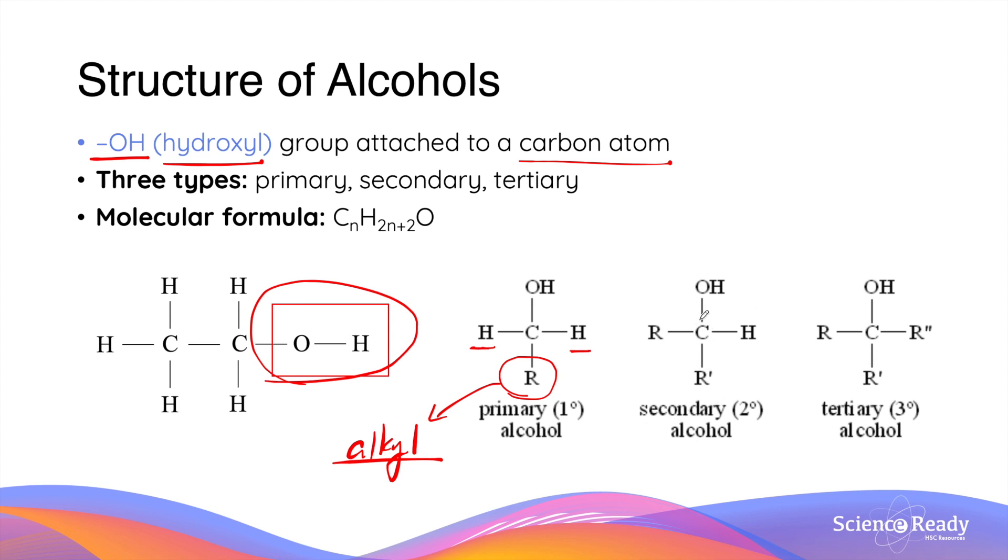Secondary alcohol is when the carbon atom that has the hydroxyl functional group is connected to two alcohol groups, so two carbon atoms and one other hydrogen atom. Tertiary alcohol is when the carbon atom is connected to three adjacent alcohol or carbon atoms. It is very important for you to understand and learn how to recognize these three different types of alcohols based on their chemical structure.